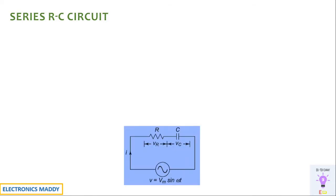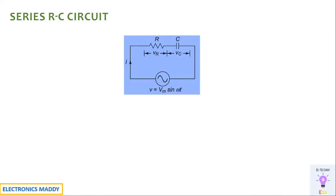Series RC circuit. In order to understand a series RC circuit in a better way, we need to understand what happens when an AC supply is connected to a resistor separately, an inductor separately, and a capacitor separately, and what happens when an AC supply is connected to a series RL circuit as well. All four of those videos are already discussed previously, and the link will be provided in the description. Please do watch them and continue with this video so that you will get a clear understanding of how the series RC response can be understood.